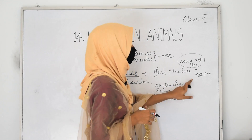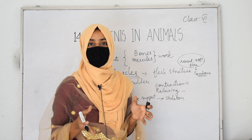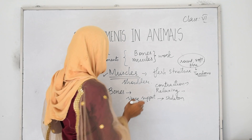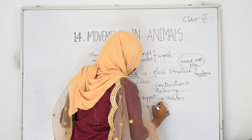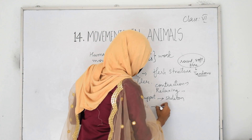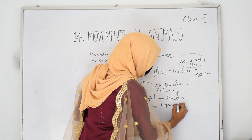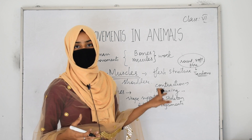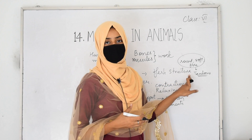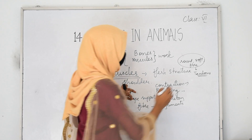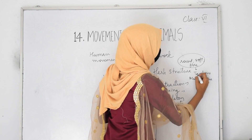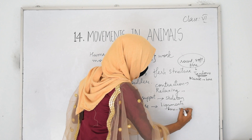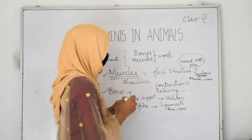We have also studied that different bones are connected with each other. Some fiber-like material, which is elastic, is present between two bones. That material is called a ligament. Ligaments are fibrous material that attaches bone to bone, while tendons are fiber-like material that attaches muscles to bones.